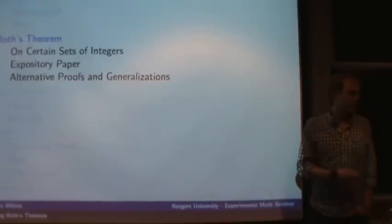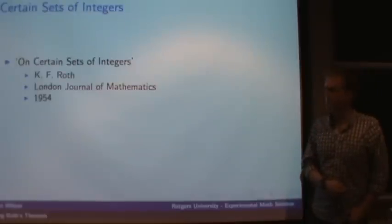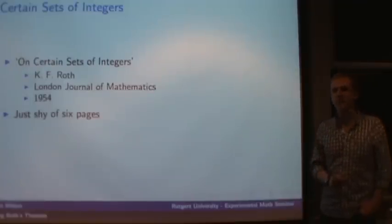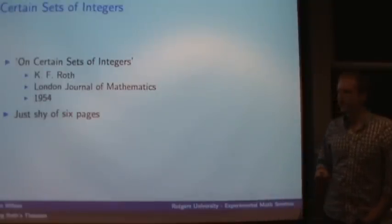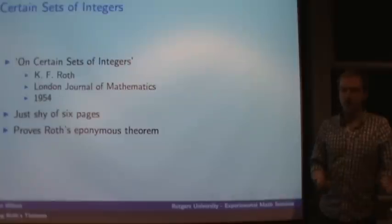So Roth's theorem was proven in a paper called On Certain Sets of Integers, and the paper is around about 55 years old. It was published in the London Journal of Mathematics in 1954, and it's really short, just under five pages. You can find it on Google Scholar or JSTOR, and it's really brief. Roth skims over most of the details and gives you almost a sketch of the proof. So he proves this theorem that came to be known as Roth's theorem.